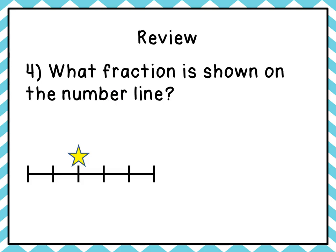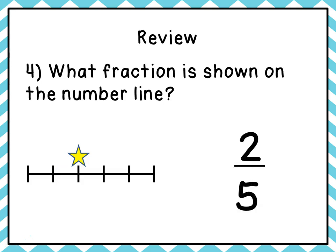Question four: what fraction do we see on the number line? First, we count the number of pieces: one, two, three, four, five — there are five pieces altogether, so our denominator is five. Then we count until we get to the marker: one, two — so two is our numerator. The fraction is two-fifths.